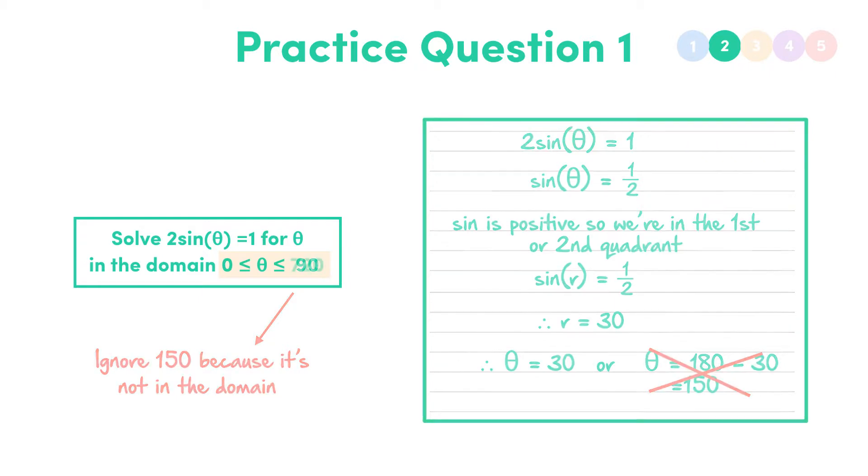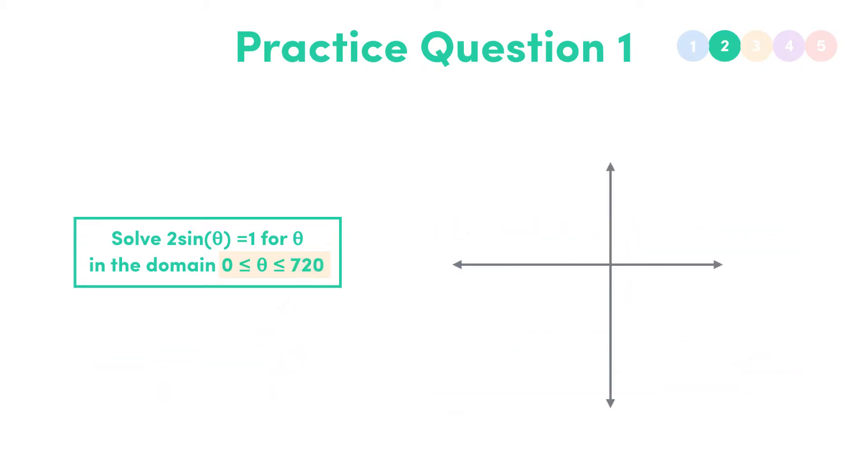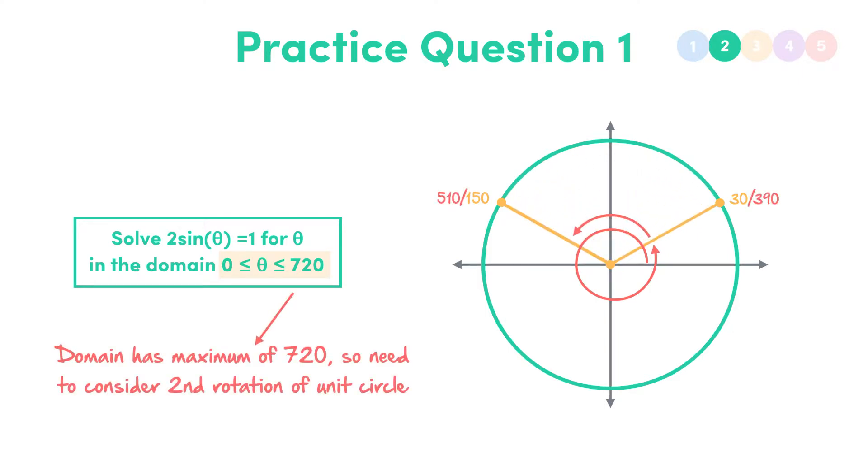If our domain was theta between 0 and 720, we would have to consider a second rotation around the unit circle. So our answers would be 30 and 150, as well as 390 and 510, because sin 390 and sin 510 also equal a half.